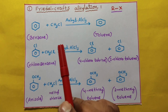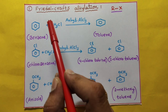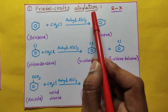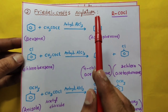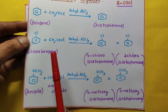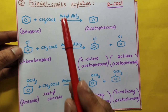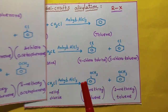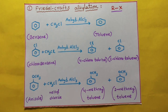Hello students, welcome to ASN Chemistry. Today in class we are going to learn Friedel-Crafts alkylation, Friedel-Crafts acylation of benzene, chlorobenzene, and anisole. These 6 reactions are very important. In 5 minutes we are going to learn these 6 reactions. Let us start the class.